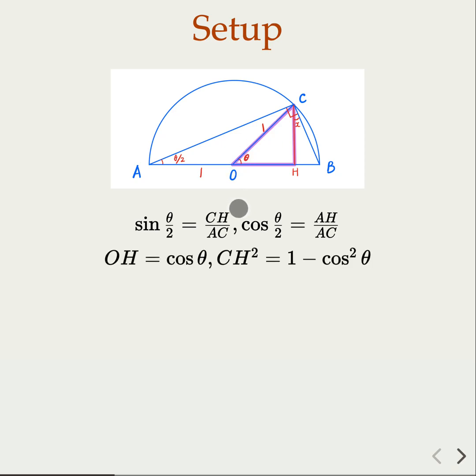So we have OH is cosine θ, and then we have CH. Would it be sine θ, but then we're going to use CH² equals 1 minus cosine² θ. That could be Pythagorean theorem also. So CH² equals 1² minus OH².